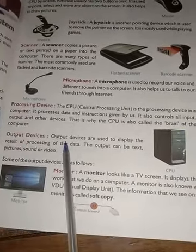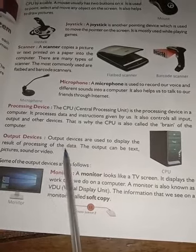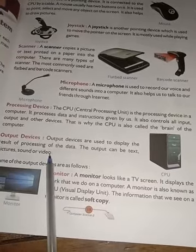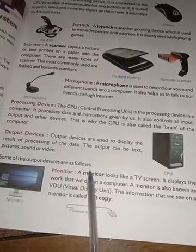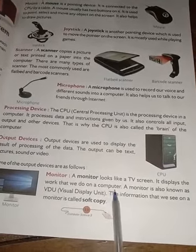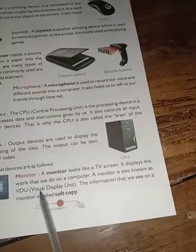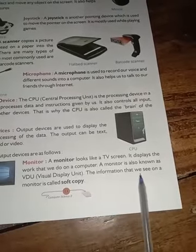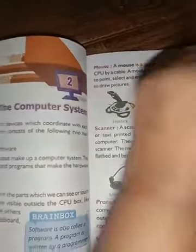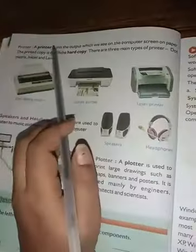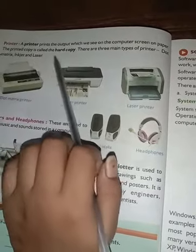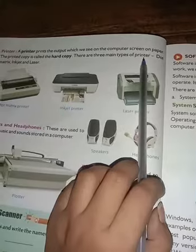Output device kya hota hai? Output device display karta hai jo data ki processing ka result hai. Output text, picture, sound aur video ho sakta hai. Monitor TV screen ki tarah dikhta hai aur display karta hai jo work hum computer par karte hain. Monitor ko visual display unit bhi kaha jata hai. Information jo hum monitor par dekhte hain use soft copy kaha jata hai. Printer print karta hai output — jo hum computer screen par dekhte hain usse paper par — aur printed copy ko hard copy kaha jata hai.